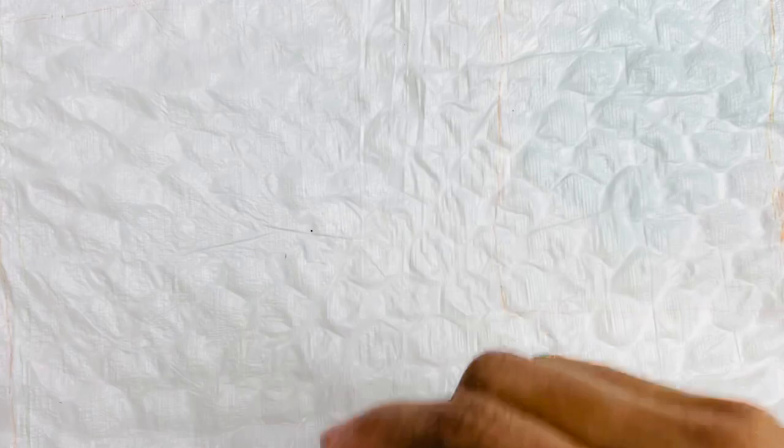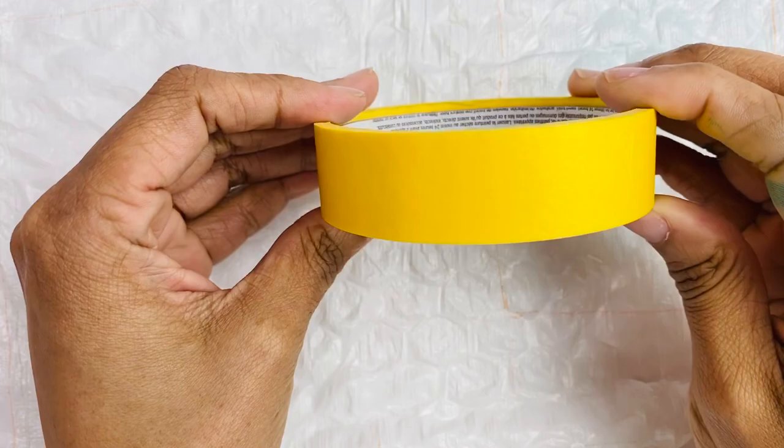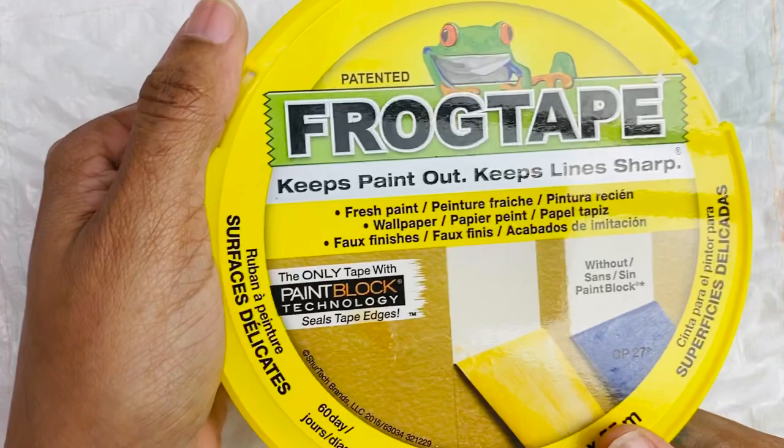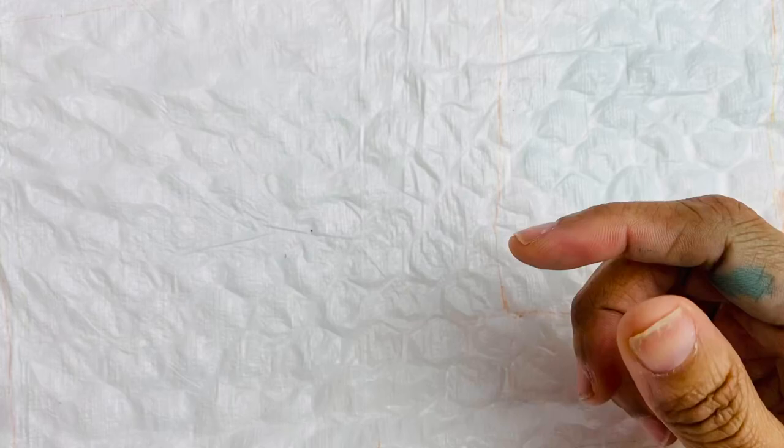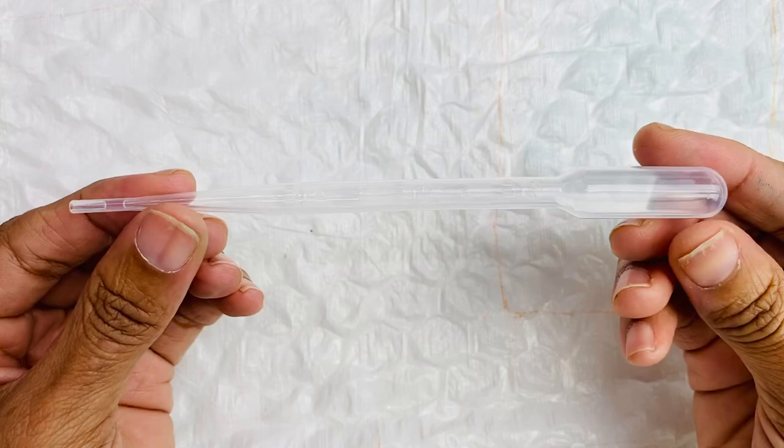In addition to the cardstock or the surface, you are going to need some painter's tape. This particular brand is the Frog Tape brand. It's their delicate surface line and I bought it in the just under an inch size, so it's 0.94 of an inch, 60 yards of it and you can find it on Amazon.